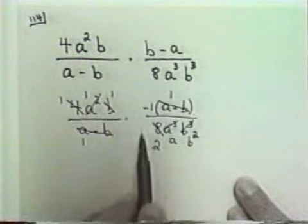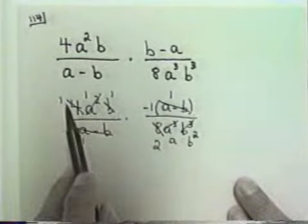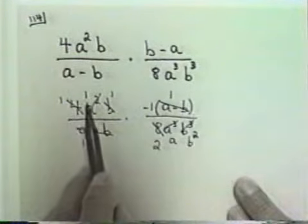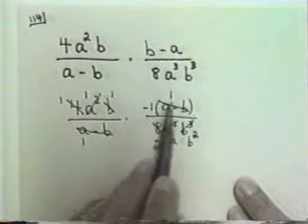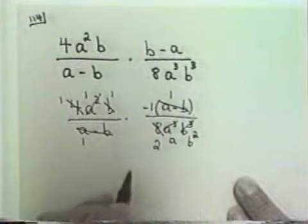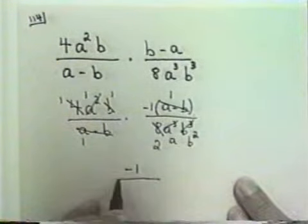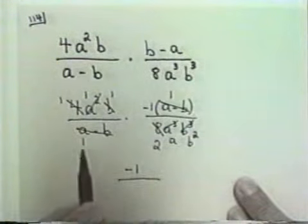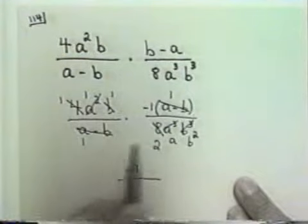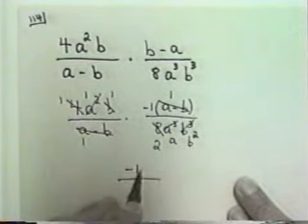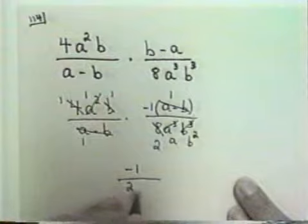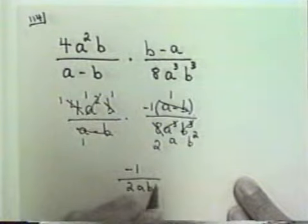Now I'll simply write my answer. 1 times 1 times 1 times negative 1 times 1 is negative 1. 1 times 2 times a times b squared is 2ab squared. So the answer is negative 1 over 2ab squared.